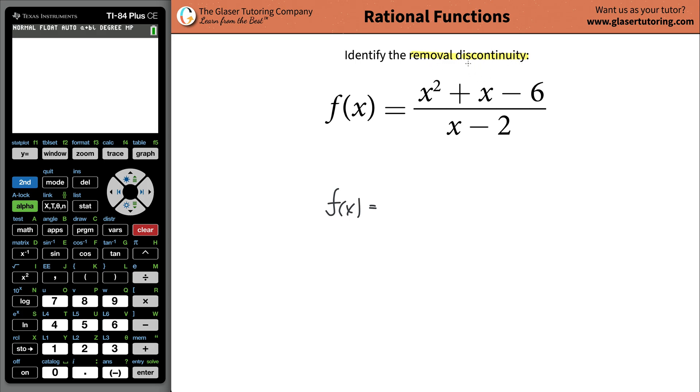By the way, what do we mean by discontinuities? We basically mean are there any x values here that cause this function to do something wacky, and there is, right? I mean, x down here cannot be 2 because if it's 2, 2 minus 2 is going to be 0, and that's a problem. You can't have 0 in the denominator because 0 divided into anything doesn't make any sense.